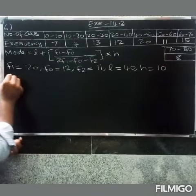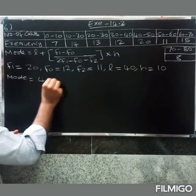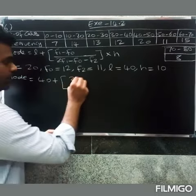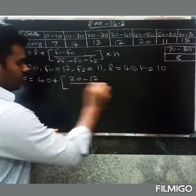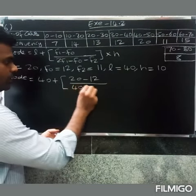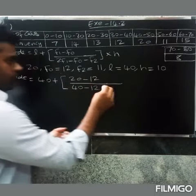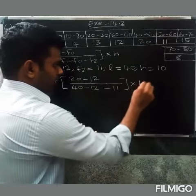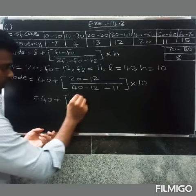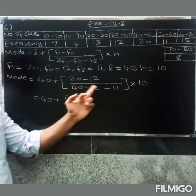Substituting: Mode equals L 40, plus F1 minus F0, that is 20 minus 12, divided by 2 into F1 which is 2 into 20 equals 40, minus F0 12, minus F2 11, into H 10. So 40 plus 8 divided by 17, into 10.